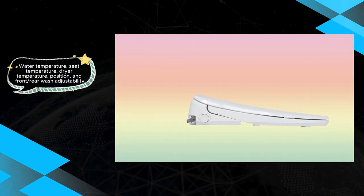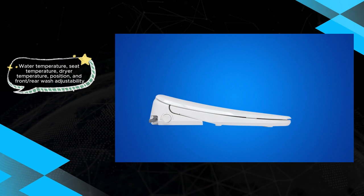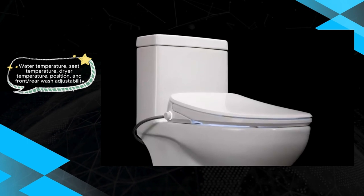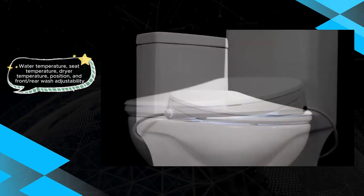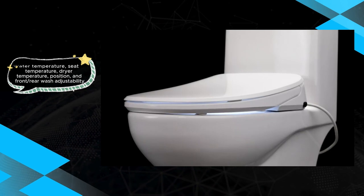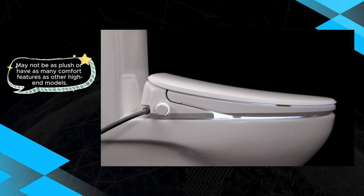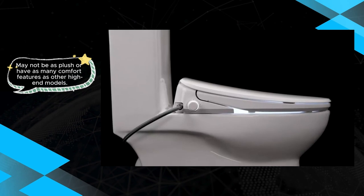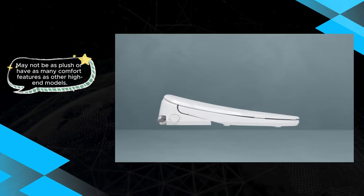However, the seat may be less comfortable compared to some other high-end models, lacking plushness and certain comfort features. The drying performance might also fall short of expectations, not delivering as effectively as other bidet seats. Moreover, the control panel layout could be perceived as obscure by some users, potentially leading to usability issues. Considering its higher price point relative to similar models, potential buyers should weigh their priorities and budget constraints carefully. While the Alpha Bidet UX Pearl excels in providing a superior wash and modern design, its drawbacks may impact its suitability for certain users.